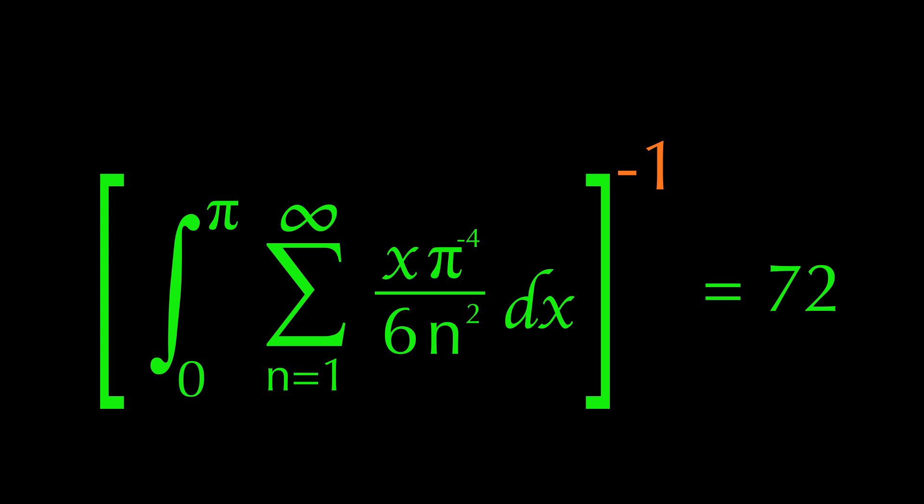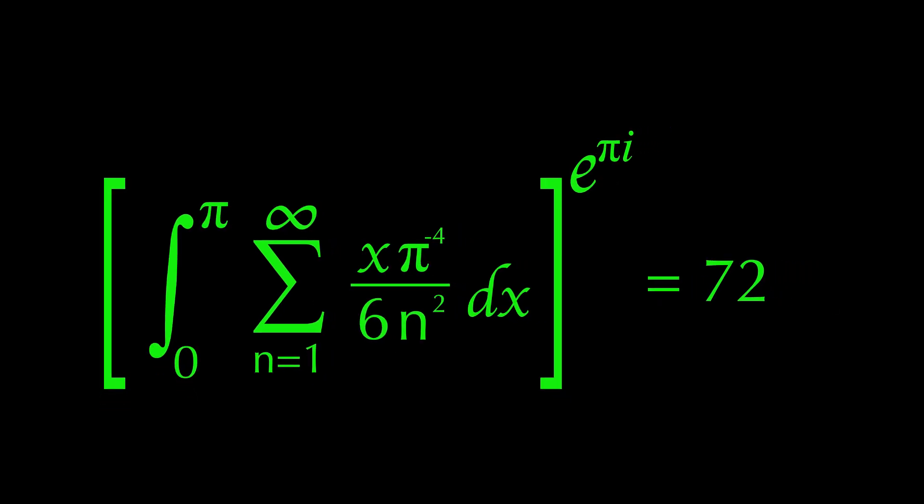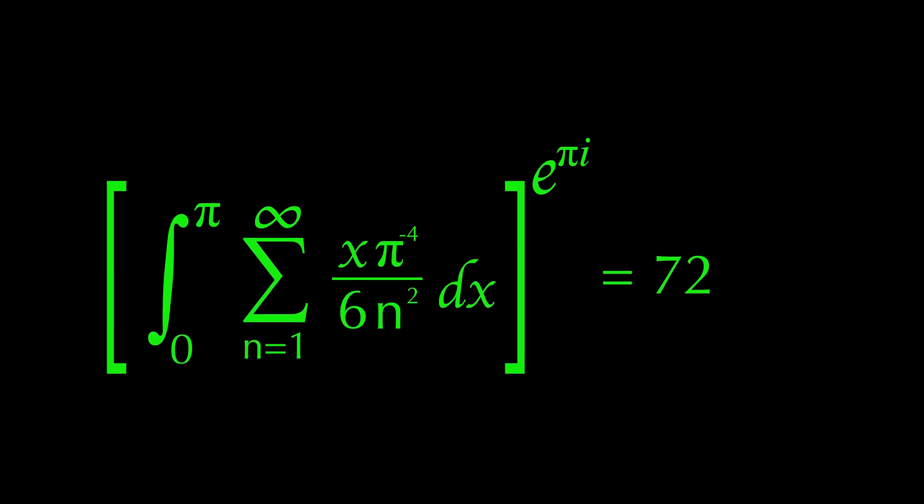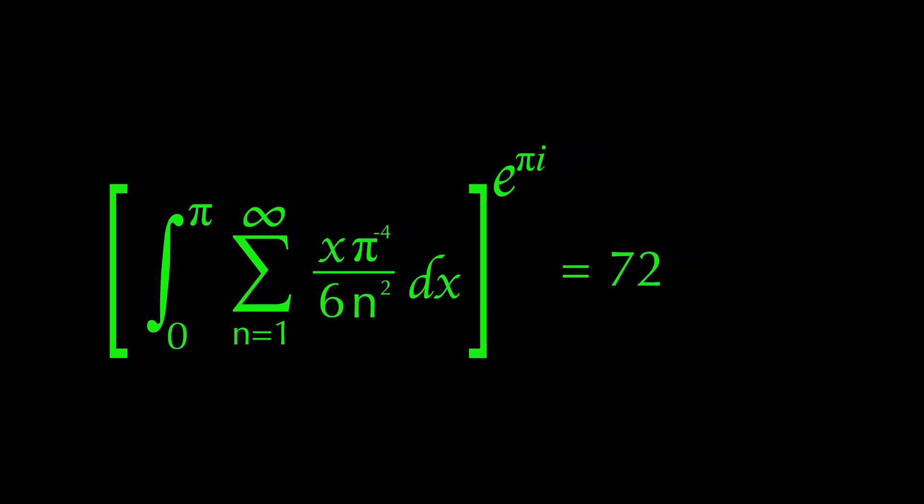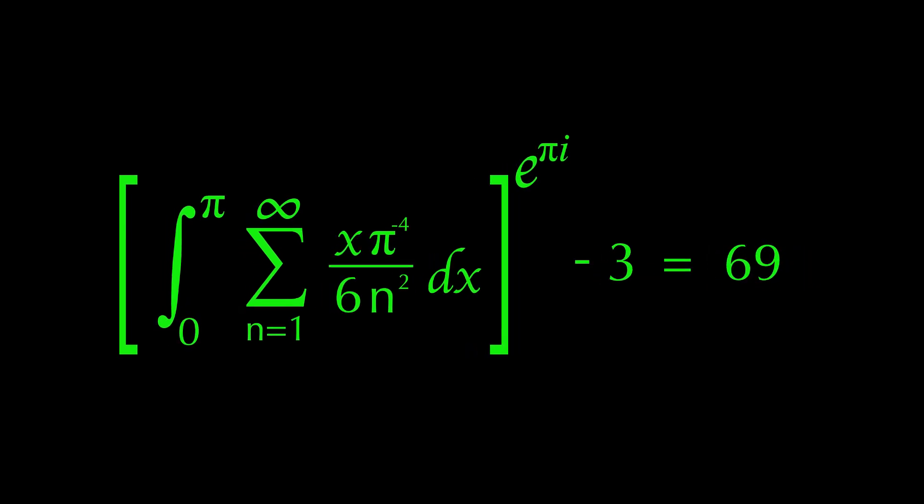And this would be a perfect moment to make that negative 1 into Euler's identity. So we can make our equation look classy. Alright, not bad. For the final step, we just need to subtract 3. And here we go. A fun way to generate the number 69 using the Basel problem.